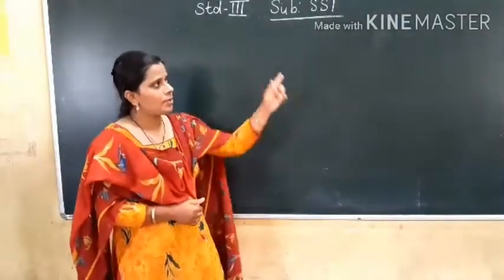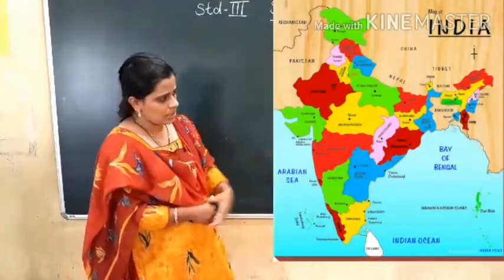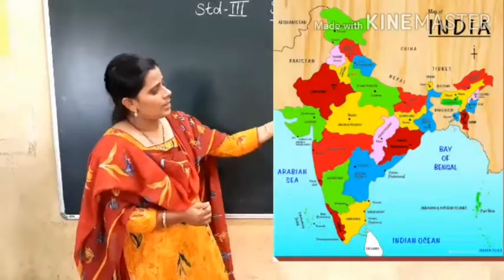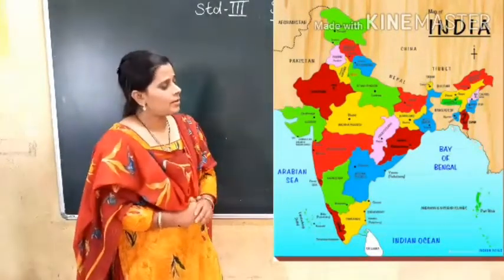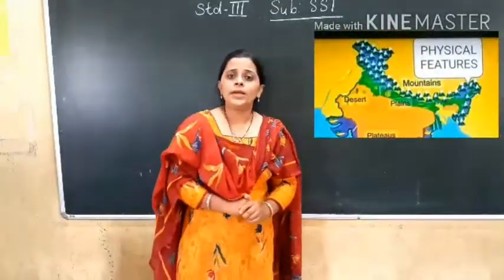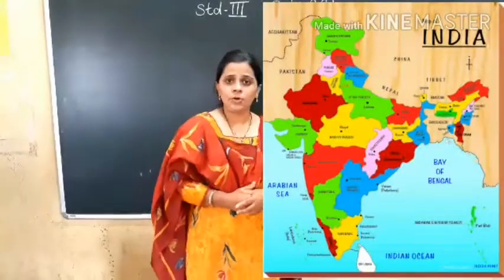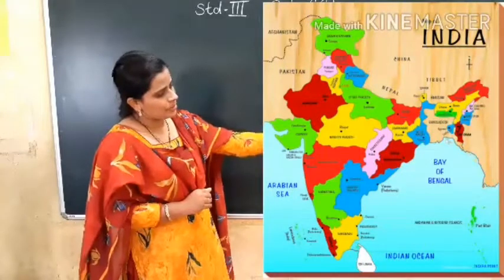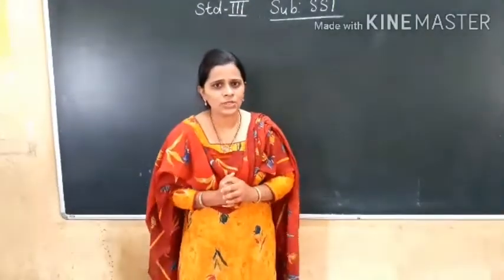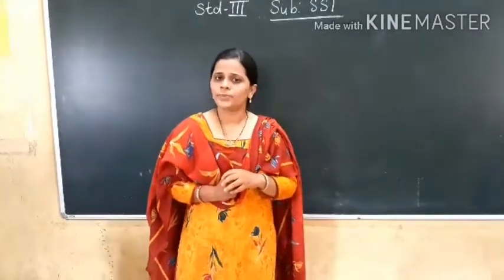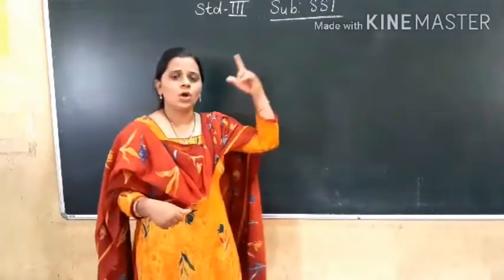India is bounded by the Indian Ocean in the South. You know about the four directions — East, West, North, South. East is where the sun rises, and West is where the sun sets.